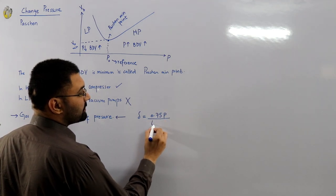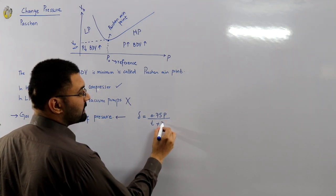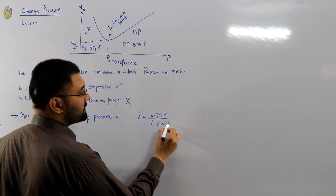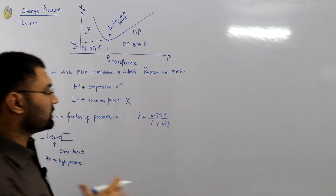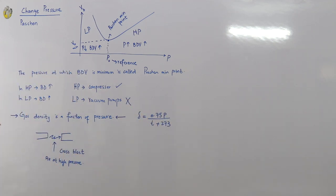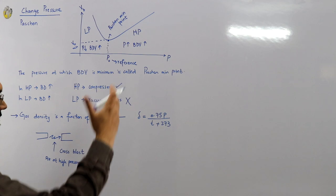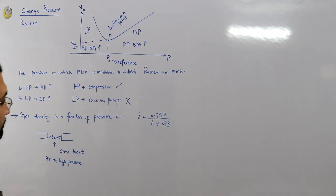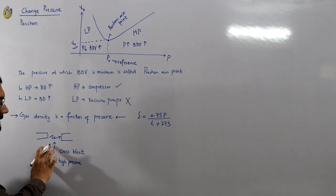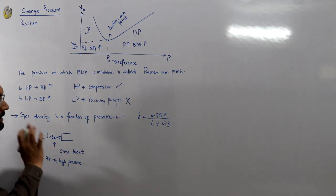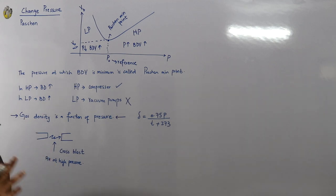The pressure or gas density formula in terms of pressure is: delta equals 0.75 times P divided by the temperature in centigrade plus 273. You can use this formula — you may just need it somewhere. So you give it air at high pressure to extinguish this arc.